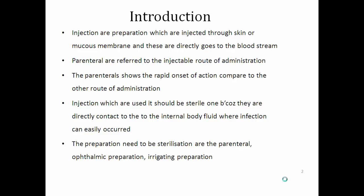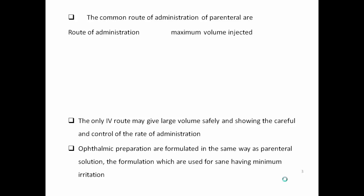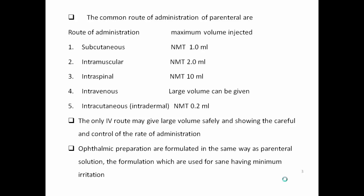Parenterals show a very rapid onset of action compared to other routes of administration. The common routes of administration of parenterals are: subcutaneous, intramuscular, intraspinal, intravenous, and intradermal. The maximum volume injected subcutaneously should not be more than 1 ml, intramuscularly not more than 2 ml, intraspinally not more than 10 ml, and intravenously large volumes can be given.